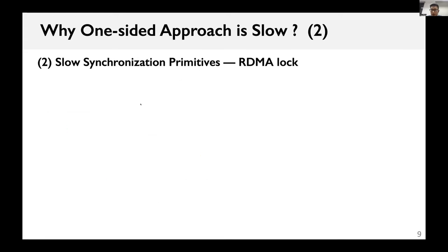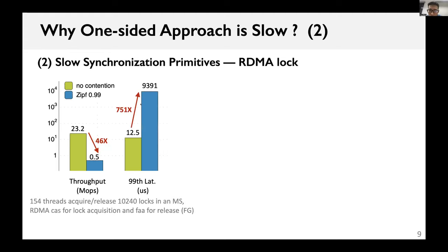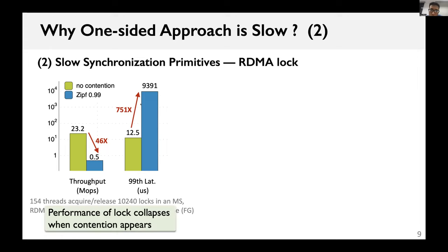The second cause is the slow RDMA-based lock. We evaluated the locks used by FG, which use RDMA compare-and-swap to acquire locks and RDMA fetch-and-add to release locks. When contention appears, the system suffers from severe performance collapse in both throughput and latency.